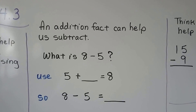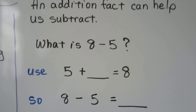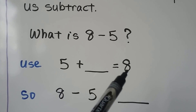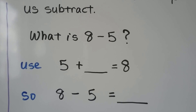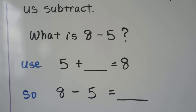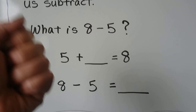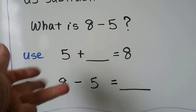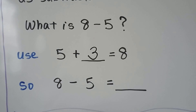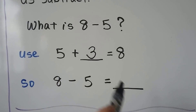An addition fact can help us subtract. What is 8 minus 5? We use 5 plus some number is equal to 8. We can think of 5, then count on: 5, 6, 7, 8. That would be a 3. So 8 minus 5 is equal to 3.